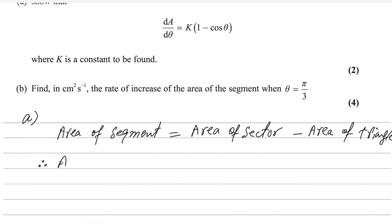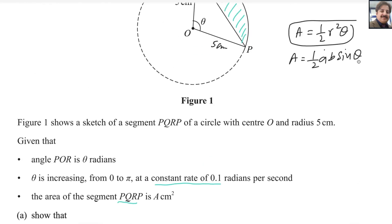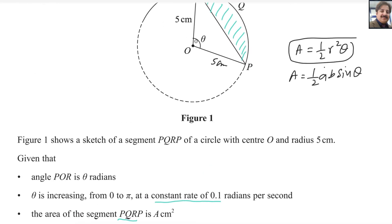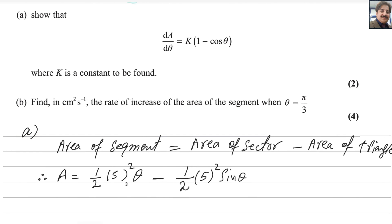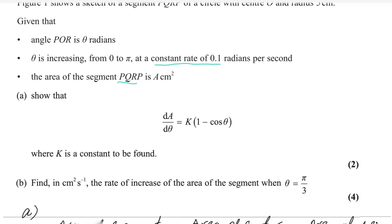Therefore, area of segment equals area of sector (1/2)(5²)θ minus area of triangle (1/2)(5)(5)sinθ. This simplifies to (25/2)θ − (25/2)sinθ. After finding the area of the segment, we differentiate with respect to θ. Note that 0.1 radians per second is dθ/dt, which we will use in the next part.